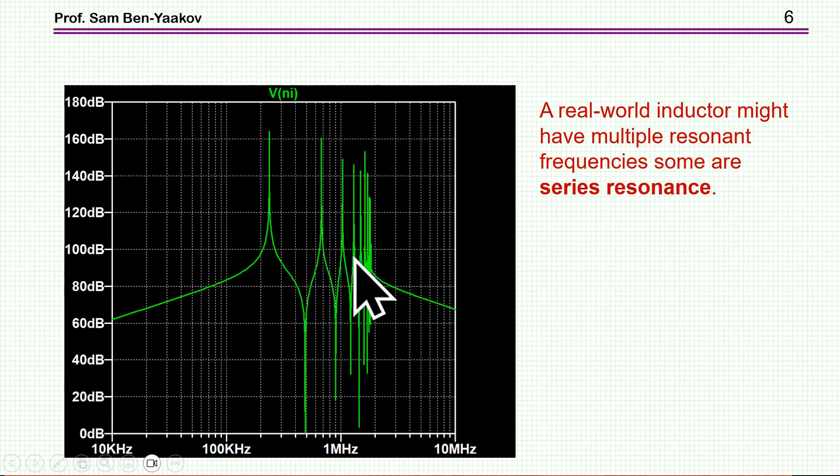Now, these peaks, these resonant points are very important, especially the ones which are series resonance, in which the impedance goes down very much, which means that at this range of frequency you will have injection through the inductor. It does not operate like a high impedance.